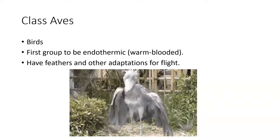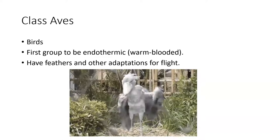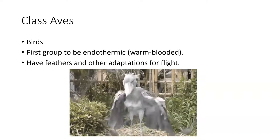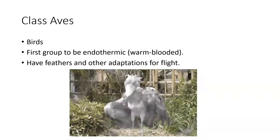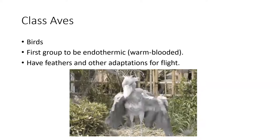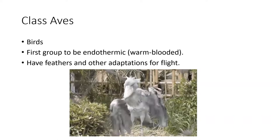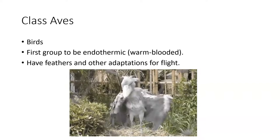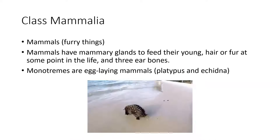Class Aves — birds may or may not deserve their own class; DNA evidence suggests they are actually reptiles. If you've seen a naked baby bird, you understand the 'birds are dinosaurs' connection. The shoebill stork especially looks prehistoric. This is our first fully warm-blooded group. Birds are adapted for flight: feathers prevent water loss while being lightweight and providing lift, hollow bones reduce weight, and females usually have only one ovary to reduce mass. Flightless birds like ostriches and emus retain feathers but lack hollow bones.